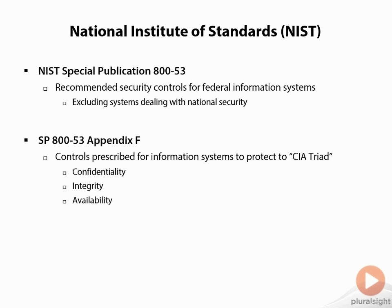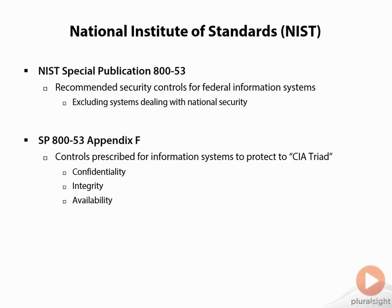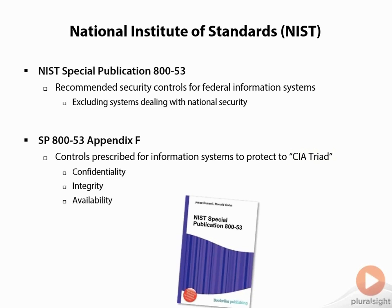Specifically, we're dealing with SP 800-53, Appendix F, and that covers controls prescribed for information systems to protect what's known as the CIA triad. It's not the CIA you may be thinking of — CIA stands for confidentiality, integrity, and availability. These are the three things we want to make sure we can provide and secure when talking about information systems security. Here's an example of what the book looks like — it's definitely worth reviewing to add to your information security background.